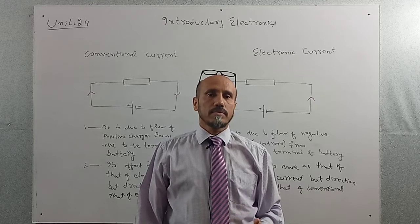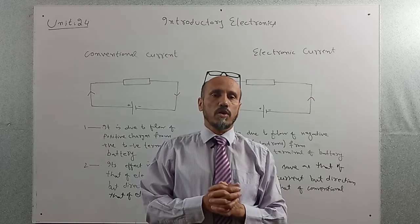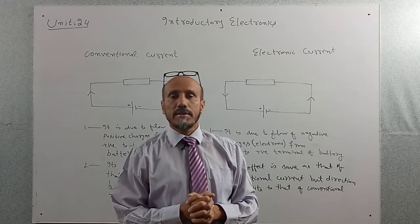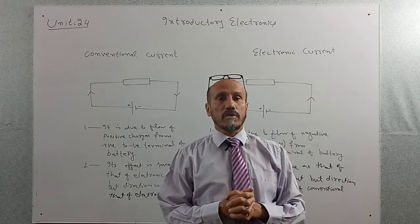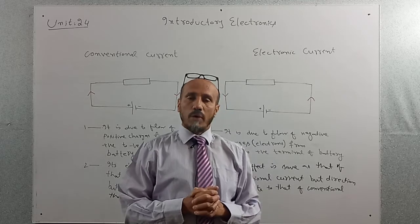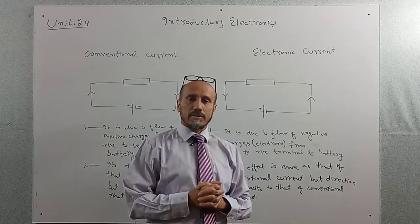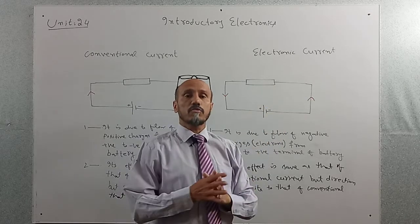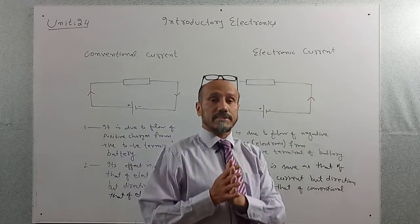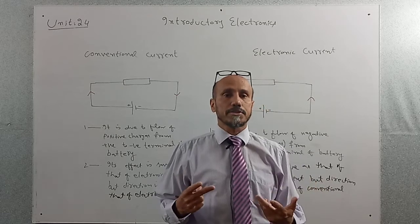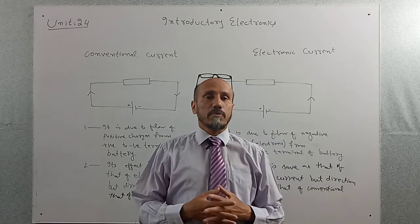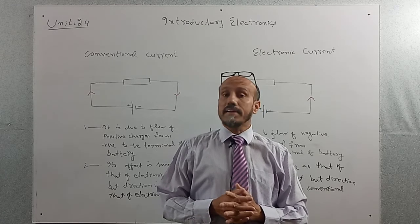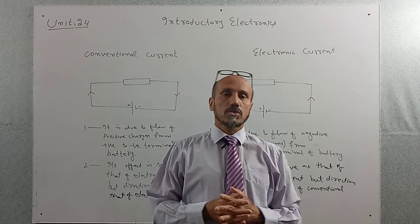So there are two differences between these two. Number one: conventional current flows from the positive terminal of the battery to the negative terminal. Number two: conventional current flows due to the flow of positive charges, while electron current flows from the negative terminal to the positive terminal and is due to the flow of negative charges, that is electrons. However, one thing is common — the effect of both conventional current and electron current is the same, but their directions are opposite to each other.